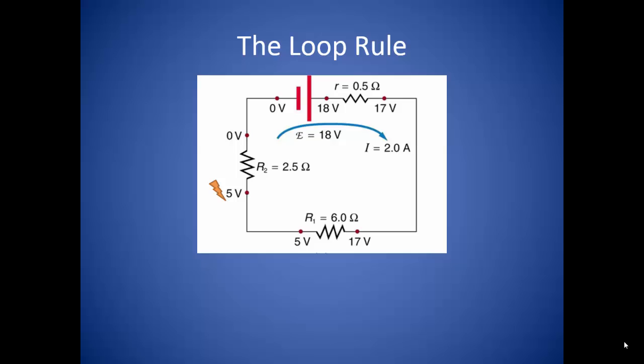The potential drops by IR as we move across the resistor to 17 volts. It stays at 17 volts going into the next resistor before dropping to 5 volts on the other side. It stays at 5 volts as it moves through the last resistor and drops to 0 volts.